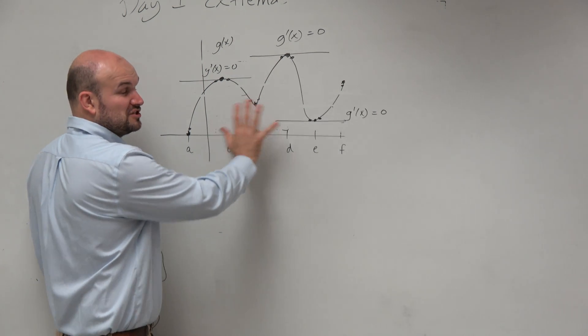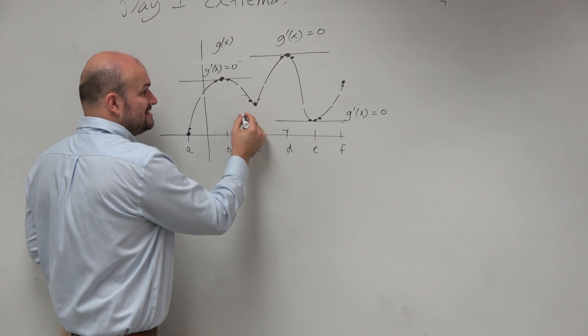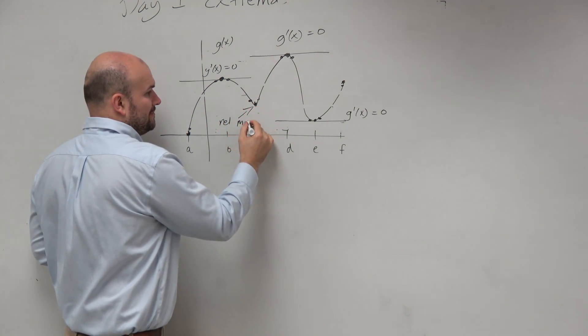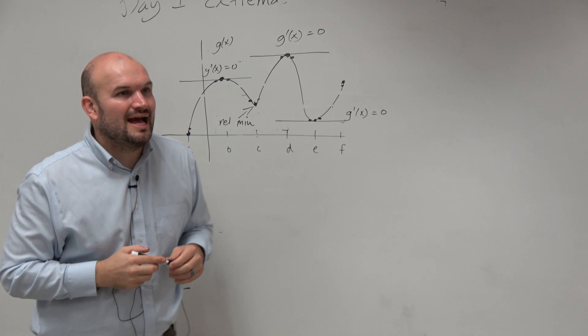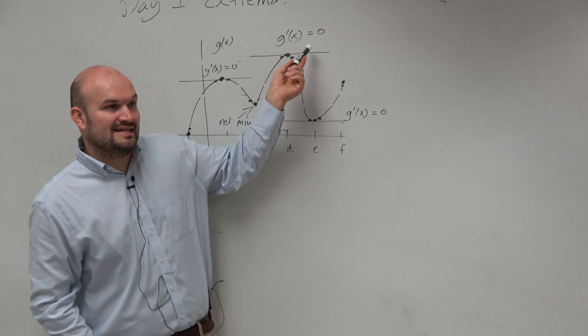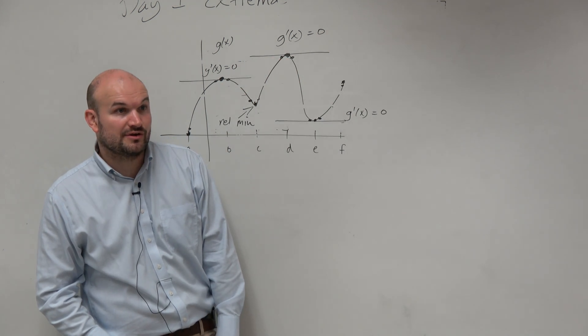But I just want you to visualize, since we have this graph, this is still a relative min. But guess what? Algebraically, we can't find it by using the derivative. Would you agree with me?